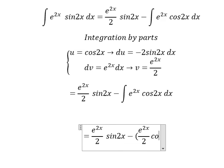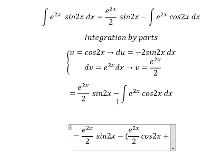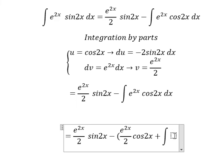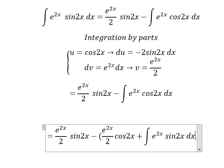Next, we have u multiplied by v. So 2 divided by 2, but we have a negative sign here. Negative with negative here gives positive, and we have the integration e^(2x)sin(2x)dx.